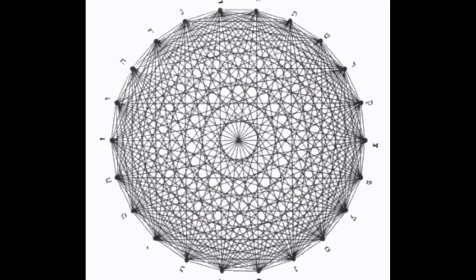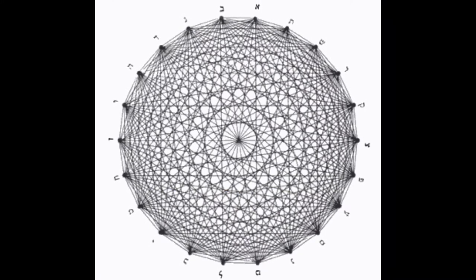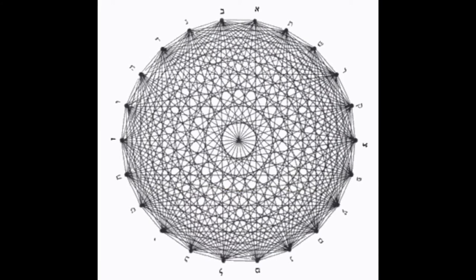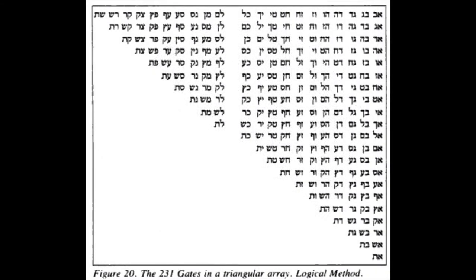When any 22 points are arranged in a circle, exactly 231 lines can be drawn across the circle's face to connect each one to every other. Because there are 231 connections between every foundation letter and every other, there are also 231 letter pairs or two-letter words formed in this manner, excluding repetition and consideration of order.